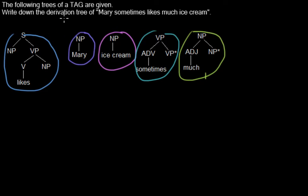The derivation tree is not to be confused with the derived tree. The derivation tree says which operations you performed in which nodes to get the derived tree. So this looks a little bit different than what we had before, but I'm using the same colors.